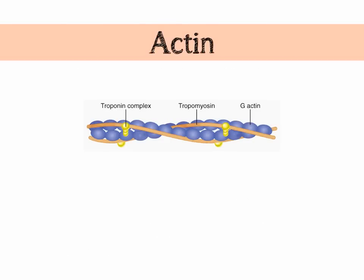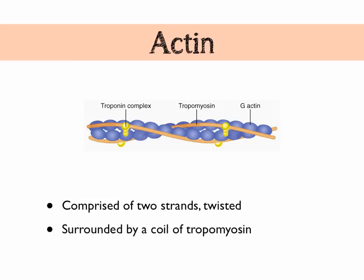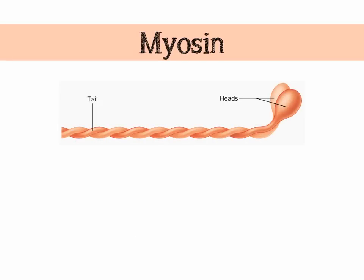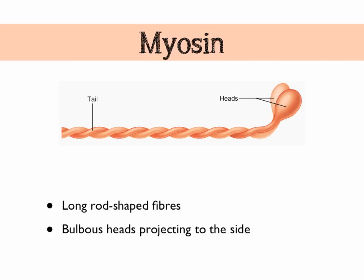Actin has two strands that are twisted around each other to make a simple helix. Wrapped around that helix we've also got a coil of tropomyosin. There are some other components like a troponin complex, but we won't focus on those here. Myosin has long rod-shaped fibers with bulbous heads that kick off to one side, and they bunch together to make really thick fibers with those heads at various places. There's a nice diagram of a myosin filament in your textbook on page 188.